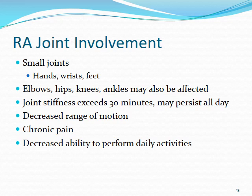A key differentiator between RA and osteoarthritis is joint stiffness. In RA, stiffness typically persists throughout most of the day, certainly exceeding 30 minutes. In OA, joint stiffness tends to go away after a period of use. With RA, decreased range of motion and chronic pain lead to decreased ability to perform daily activities, resulting in psychological stress and comorbid conditions.